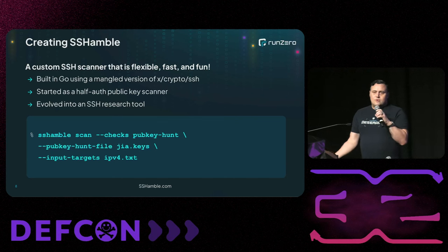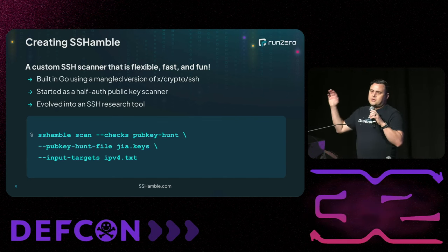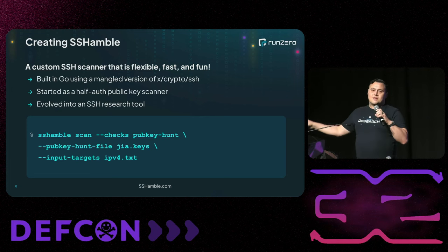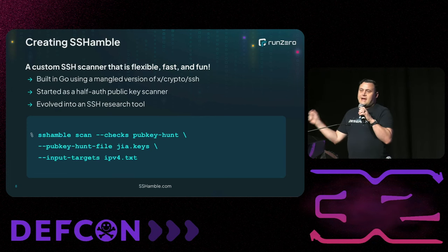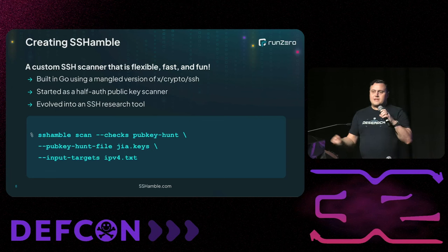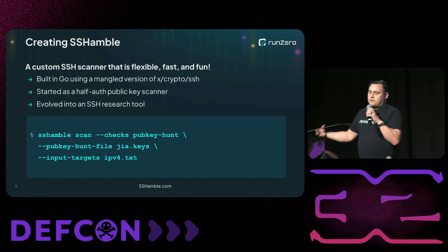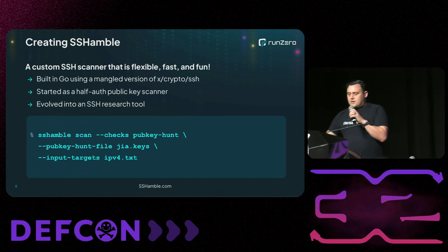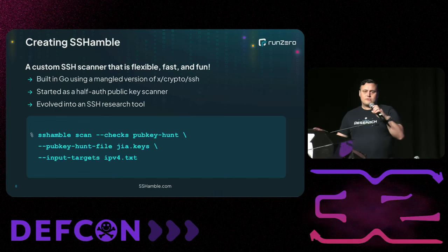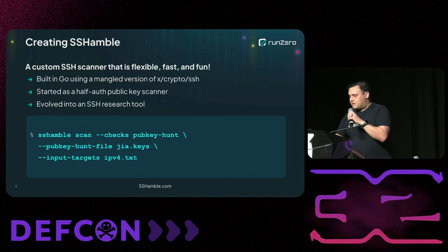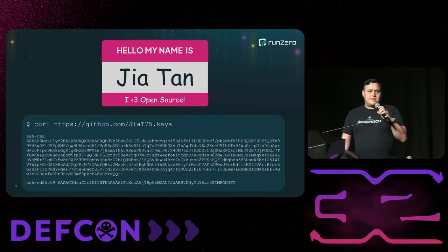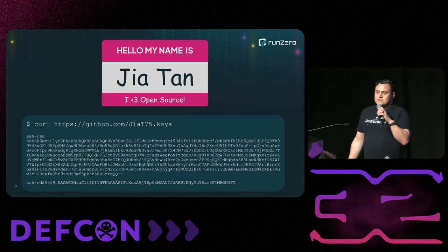We created a thing called Shamble, which started off as a half-auth scanner for SSH. You take a bunch of public keys, put them in Shamble, and scan the whole internet asking what can you access using these public keys. The idea was: if we had Jia Tan's public key, we could find all the servers they use and figure out who they are. We downloaded Jia Tan's two GitHub keys and took those public keys, ran them through Shamble, and threw them at all the SSH daemons we could find and let it grind out for a couple days.